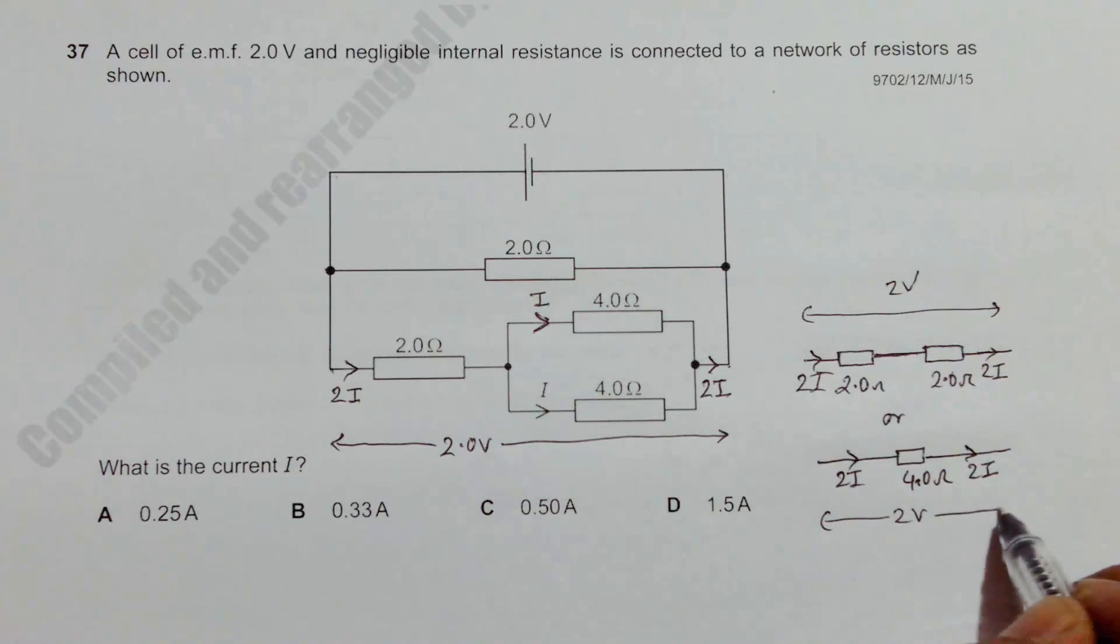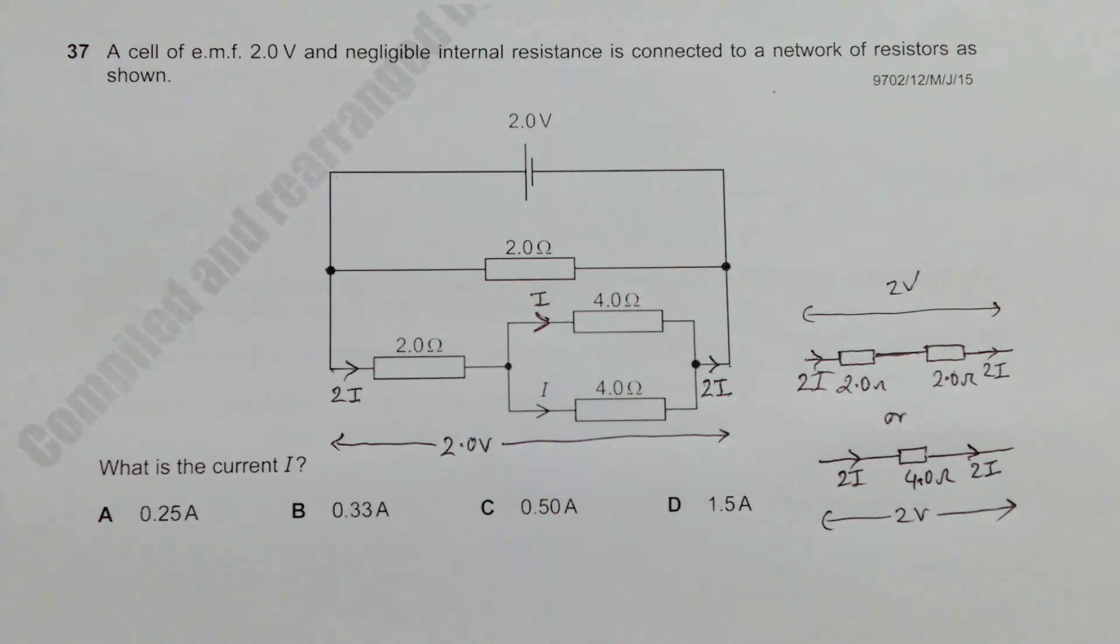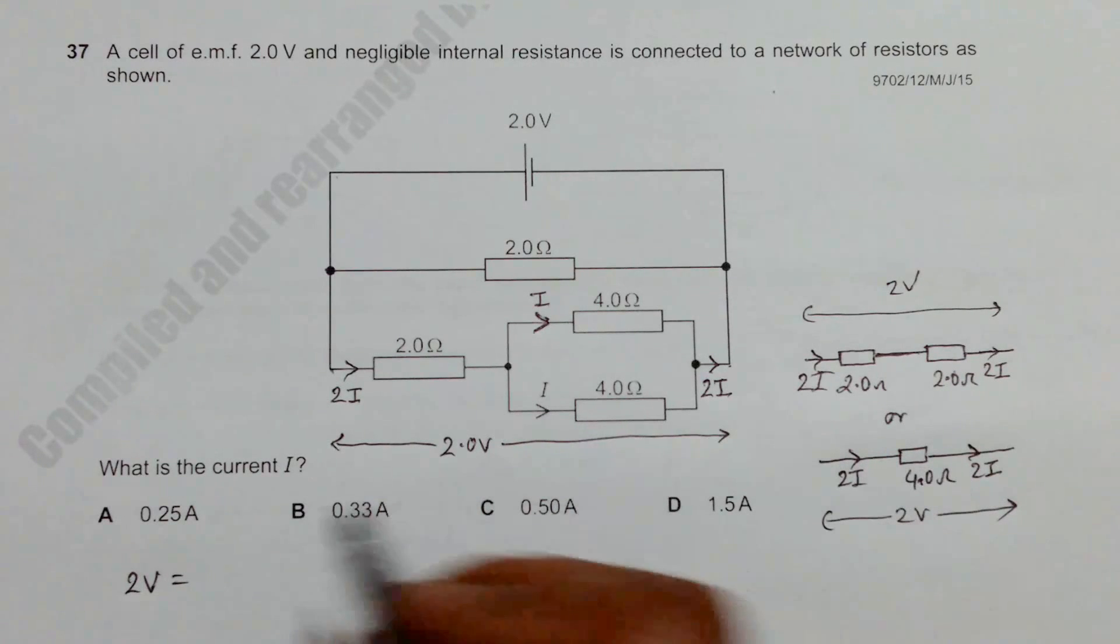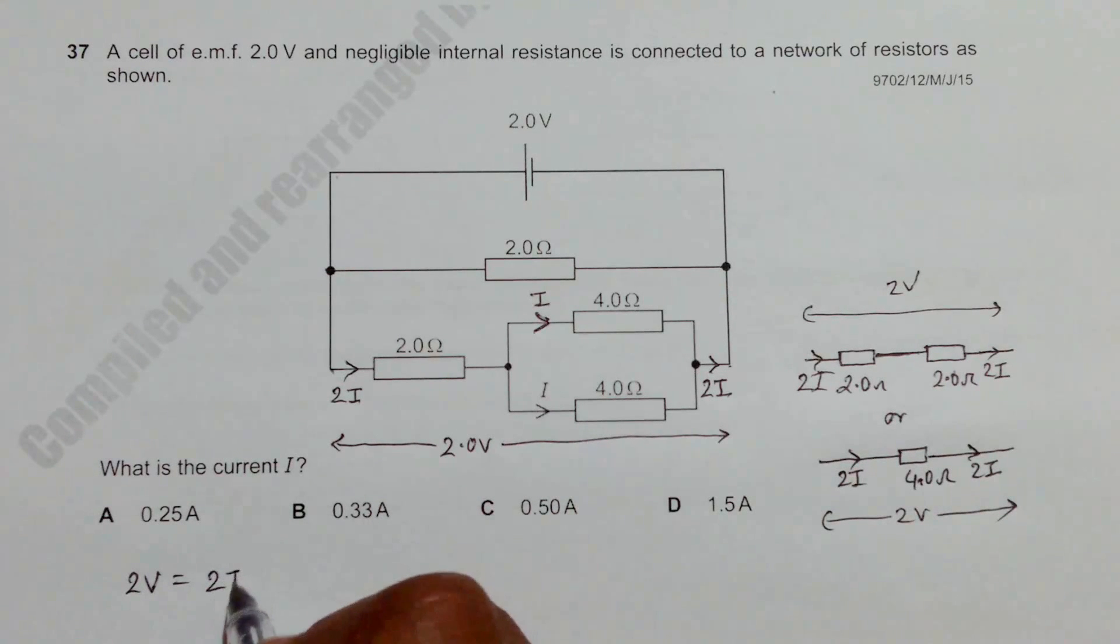Now if we form an equation here, 2 volt should be equal to current into resistance, so it is 2I into 4.0. So if I cancel this 2 and 2, I should be equal to 1 by 4.0, and that's equal to ampere.